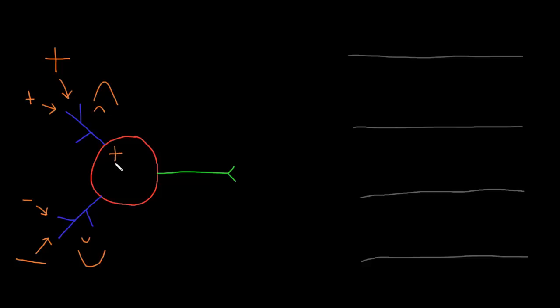Neurons process that information by summation of the graded potentials at the trigger zone to determine if an action potential will be fired down the axon. Action potentials, however, are consistently the same size and duration for any given neuron.